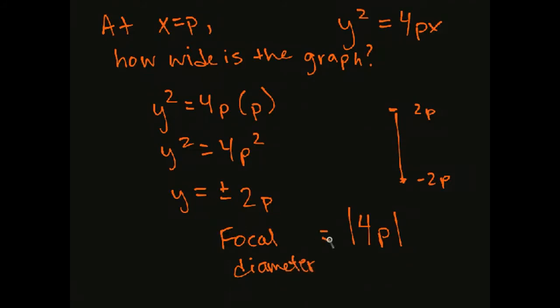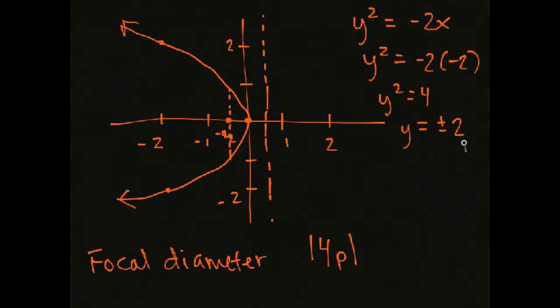So if we wanted to we could graph in that way. Let's look back at that previous graph. So what does that mean? P here was negative 1 half so the focal diameter should be 4 times negative 1 half. So that's the absolute value of negative 2 so that's positive 2. So at negative 1 half we should be going up to 1 and down to negative 1.